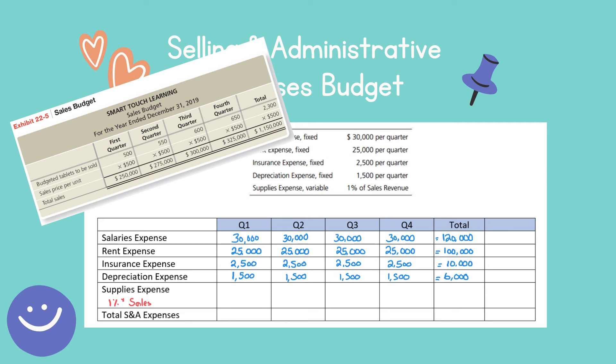Going back to the sales budget, I multiply one percent by $250,000, one percent by $275,000, one percent by $300,000, and one percent by $325,000. Now we need to add them all up — total selling and administrative expenses — by adding these five expenses together.